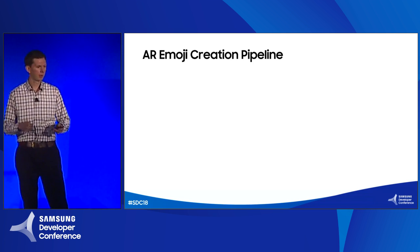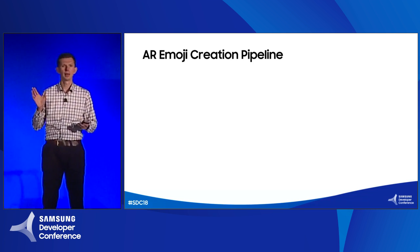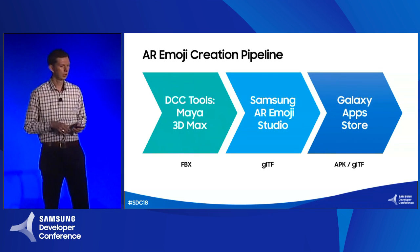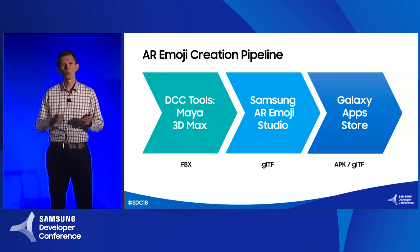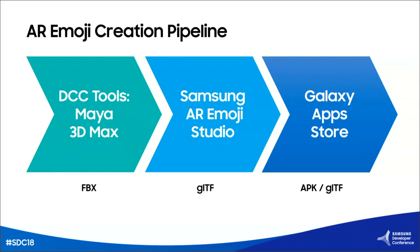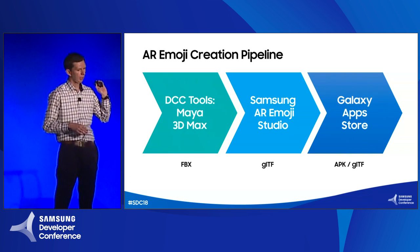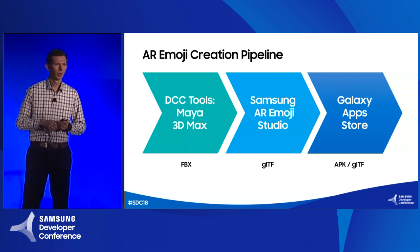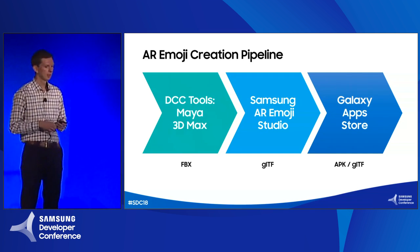At a high level, the AR emoji creation pipeline has three major stages. The major part of the work is done by 3D artists, usually in a DCC tool like Maya or Max. Second, we have the AR Emoji Studio tool, which prepares and does all the cooking work on your assets. Finally, we are ready to upload our AR emojis to the Galaxy App Store.